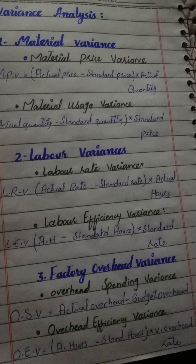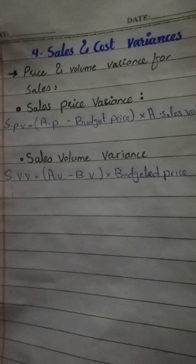The second major variance is labor variance, which is divided into two kinds: labor rate variance and labor efficiency variance. The third is factory overhead variance, which can be divided into factory overhead spending variance and factory overhead efficiency variance.